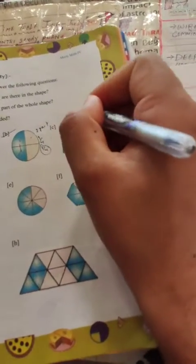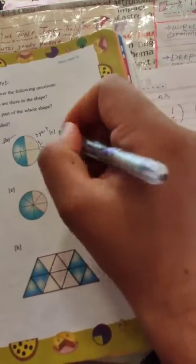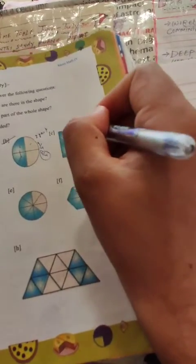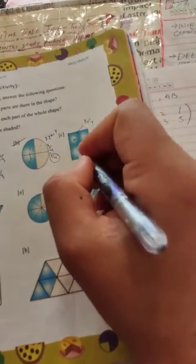Three equal parts. What fraction is shaded? 3 by 4.